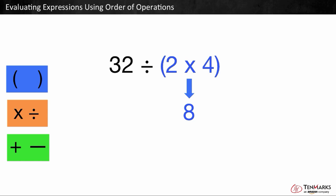Let's rewrite our expression after solving 2 times 4. We haven't done anything with the 32 and the division sign, so our new simplified expression is 32 divided by 8. There is only one operation here. 32 divided by 8 is 4.